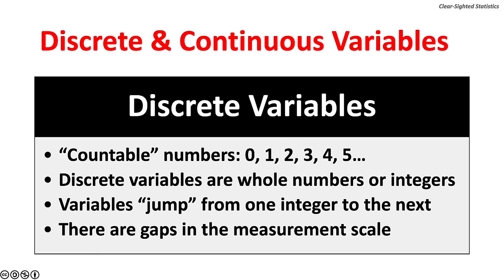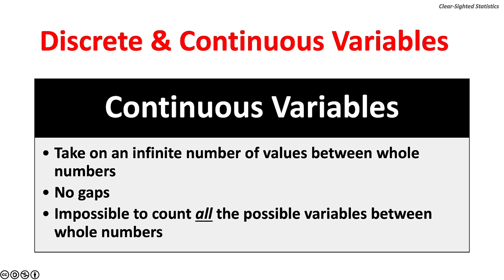Discrete variables are countable numbers: 0, 1, 2, 3, 4, 5. They are whole numbers or integers. Variables jump from one integer to the next. There are gaps in the measurement scale. Continuous variables take on an infinite number of values between whole numbers. There are no gaps between numbers. It is impossible to count all the possible values between whole numbers because there are an infinite number.